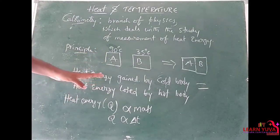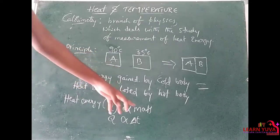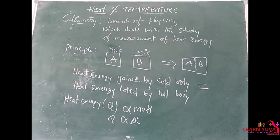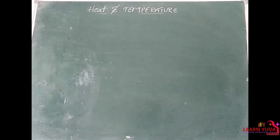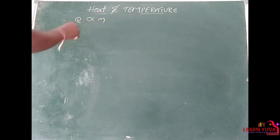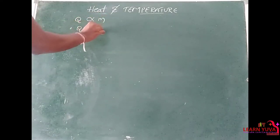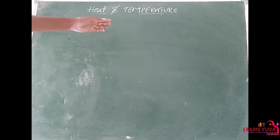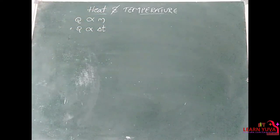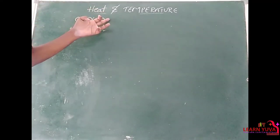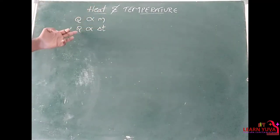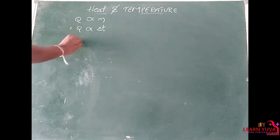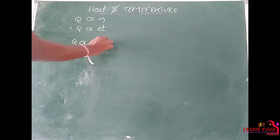The heat energy Q is directly proportional to the mass m, and heat energy is directly proportional to the rise in temperature — that means the change in temperature delta T. So, Q is directly proportional to m into delta T.